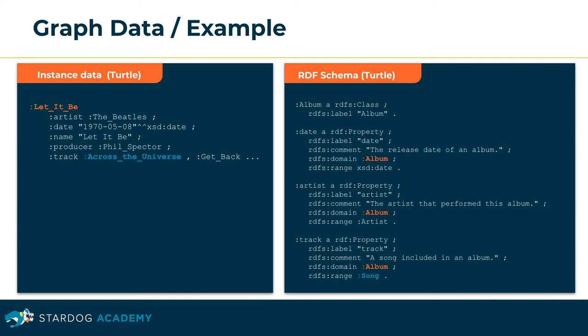Unlike the SQL data definition language or document schema languages, the schemas and ontologies in RDF do not define constraints, but inference rules. They specify what new facts — called inferences — could be derived out of the already known facts. For example, the property track is, according to the schema, assigned to instances of the class album, so a resource will be classified as an album. The property values are known to be of type SONG, so resources linked by the property track are classified as a SONG.